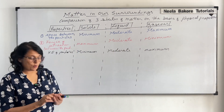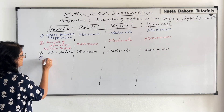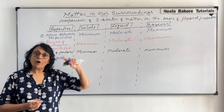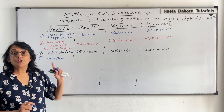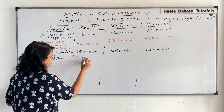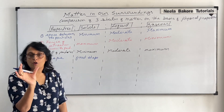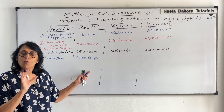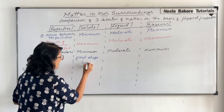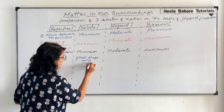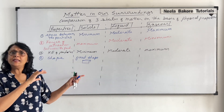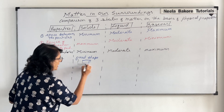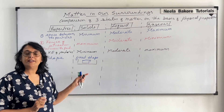Let us take one more property — that is shape. Solids have a fixed shape. If you see a block of iron or something made of wood, whatever its shape is, it is going to remain in that shape. You keep it in any type of container and the solid is going to retain its shape — solids have a fixed shape.